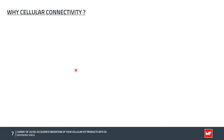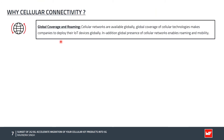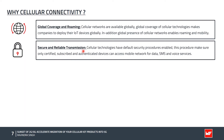Why choose cellular connectivity? What are the advantages over non-cellular technologies? First is global coverage and roaming. Cellular networks are available globally because we already use them in our mobile phones in day-to-day life. This global coverage makes it possible for companies to deploy their IoT devices globally. In addition, the global presence of cellular networks enables roaming and mobility. Next is secure and reliable transmission — cellular technologies have default security procedures enabled, ensuring only certified, subscribed, and authenticated devices can access the mobile network for data, SMS, and voice services.